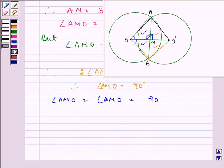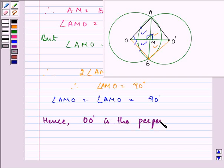So what does that prove? Exactly, it proves that hence OO' is the perpendicular bisector of AB, as AM is equal to MB as proved above, and they both are equal to 90 degrees also. So this proves that it is their perpendicular bisector. This completes the session. Hope you enjoyed it and take care.